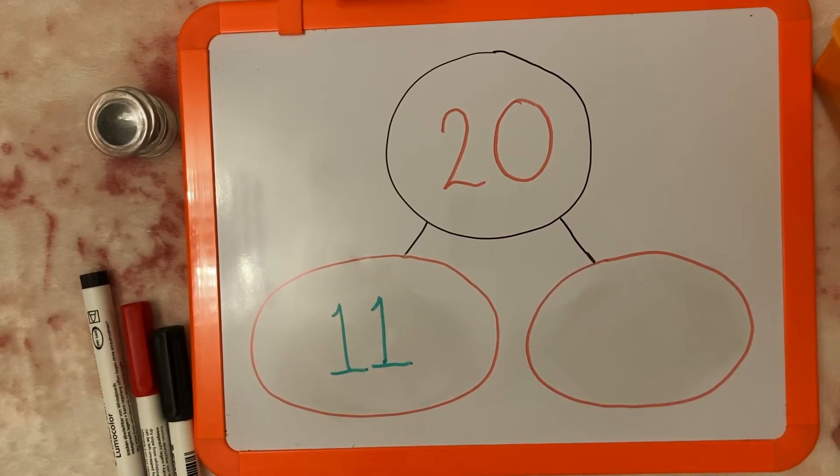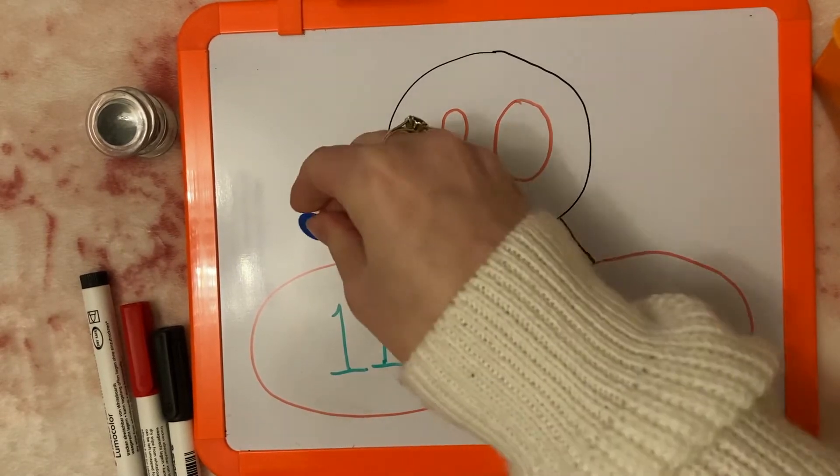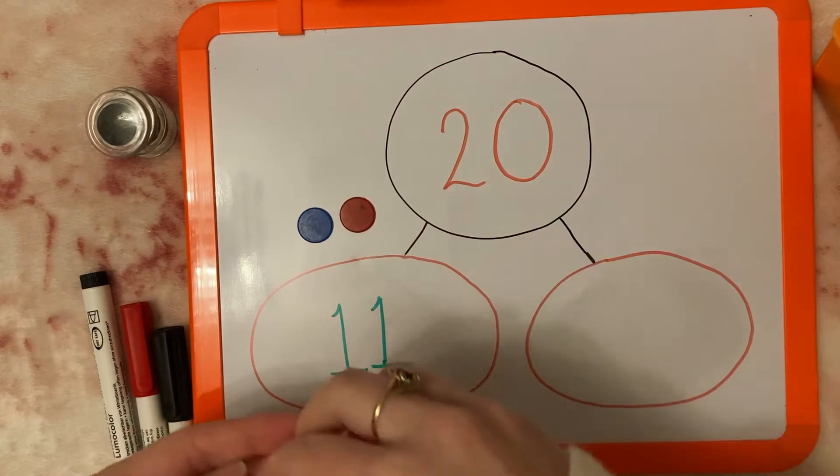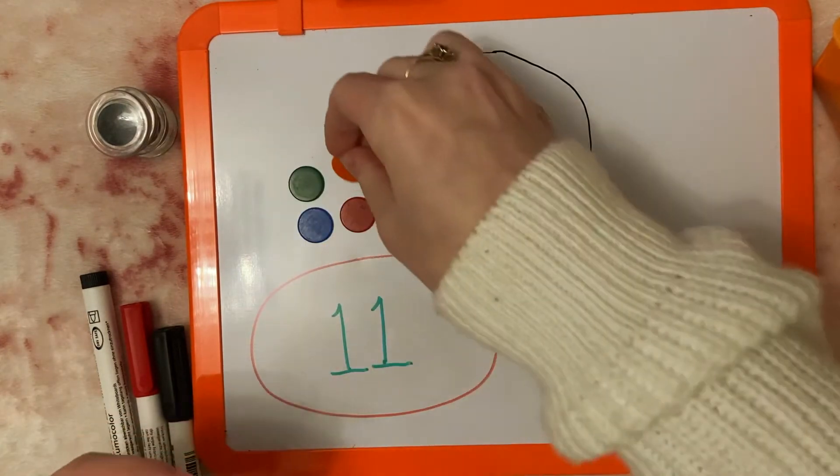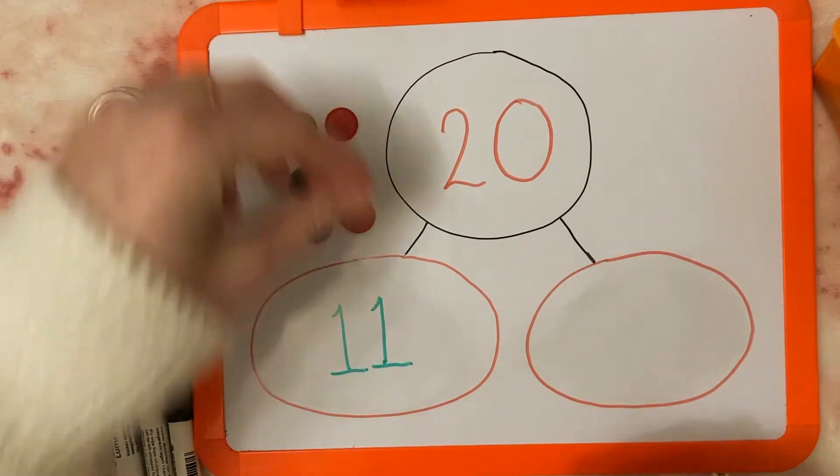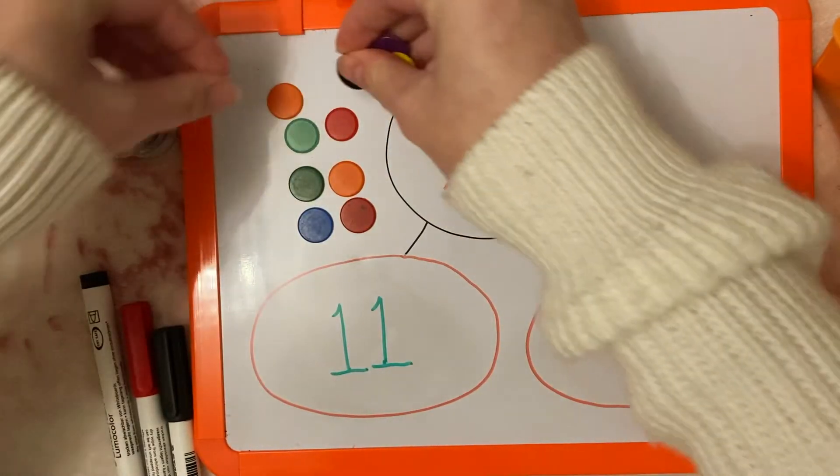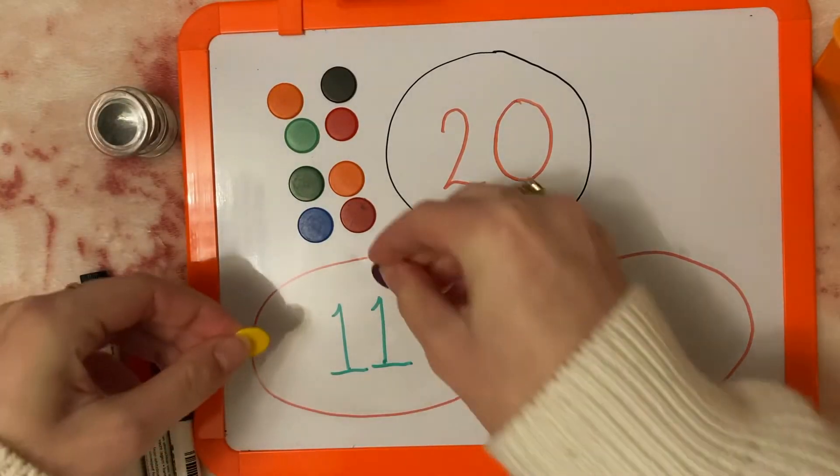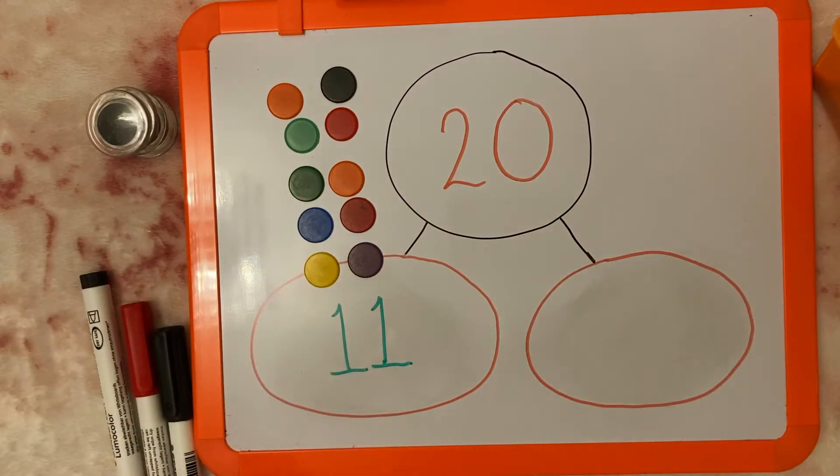Last time I used cotton balls. Today I've got some counters, so count along with me. So we'll put 11 on this side. So we've got 1, 2, 3, 4, 5, 6, 7, 8, 9, 10, 11.